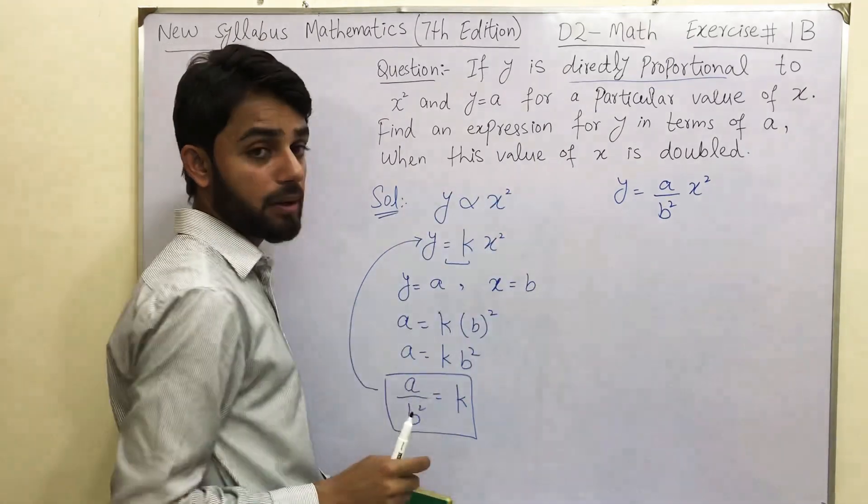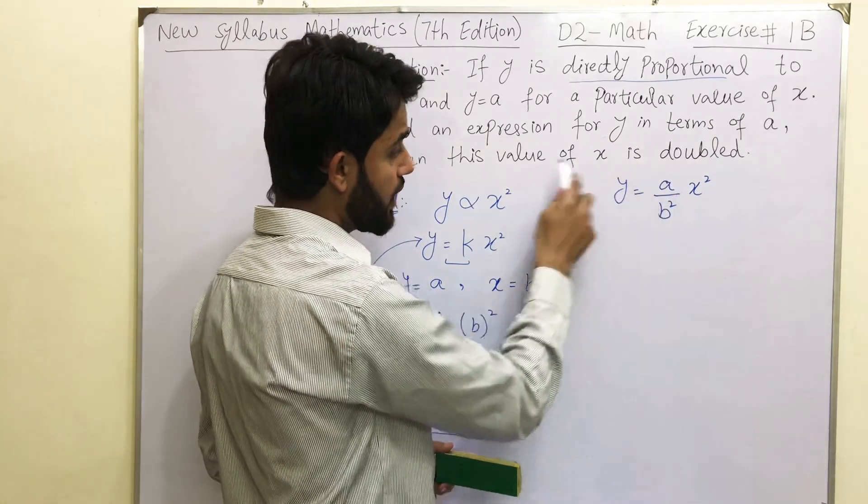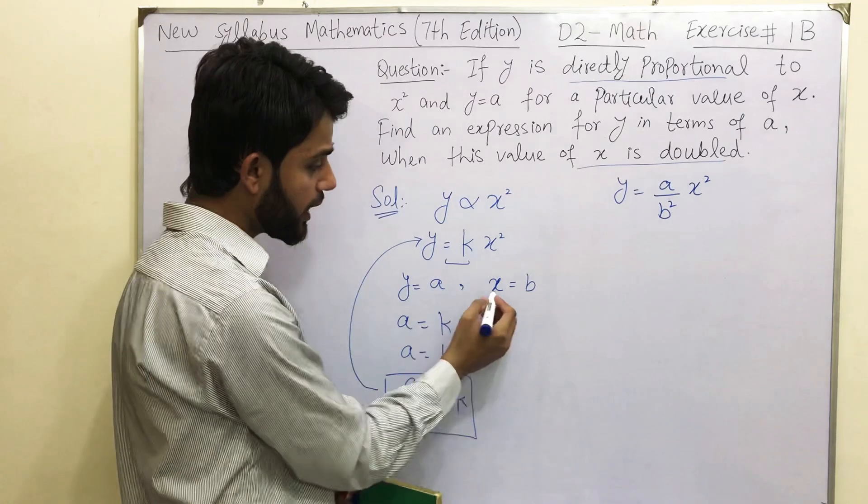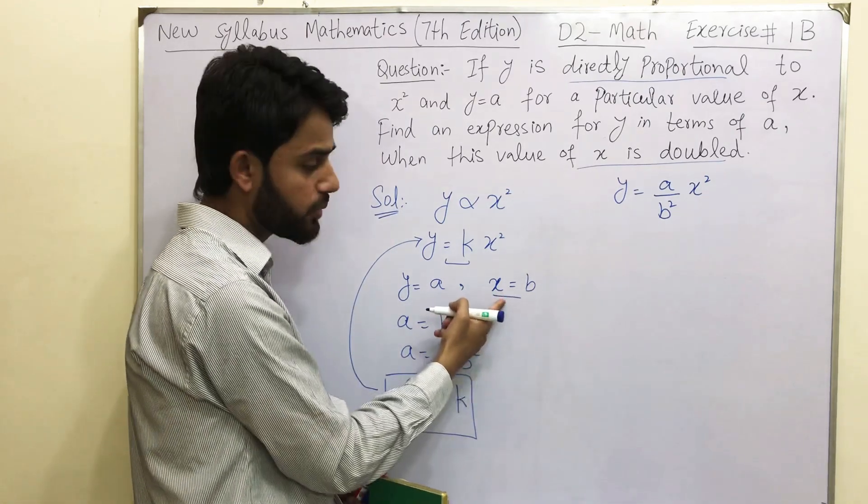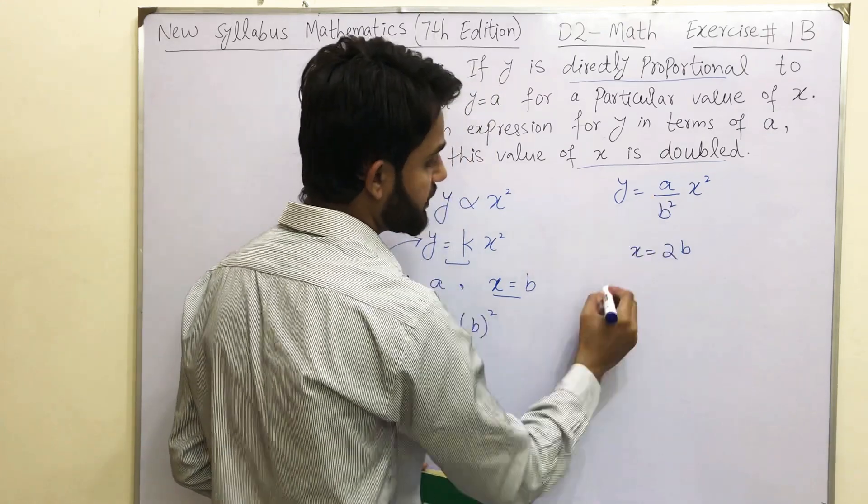When this value of x is doubled, when you will get the expression for y in terms of a. Which value? This value. Initially it was x equals to b. So we are going to plug in x equals to 2b in this step.